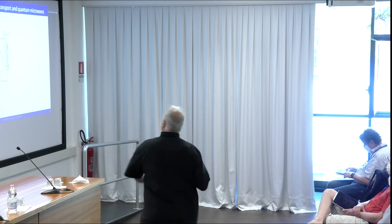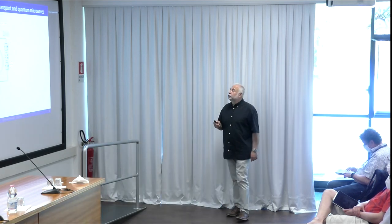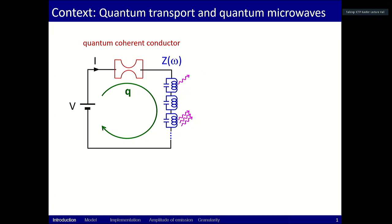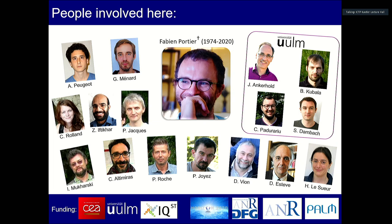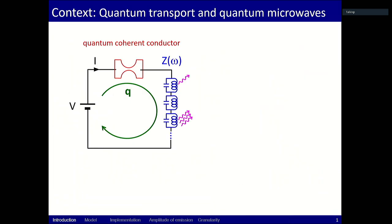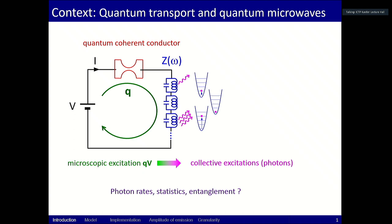The context of the study is quantum transport and the production of quantum microwaves. You push on Cooper pairs with a voltage source across a quantum coherent conductor, and you transform these microscopic excitations 2eV into collective excitations that we call photons in the environmental impedance seen by the quantum conductor. The relevant questions are how many photons, at which speed you produce them, what is the photon statistics, are the photons entangled, and so on.